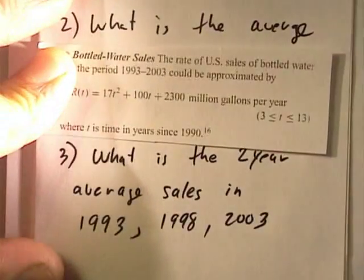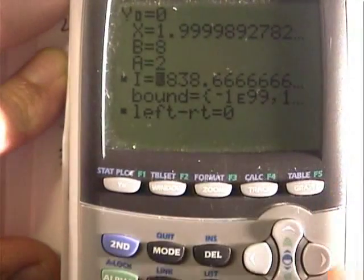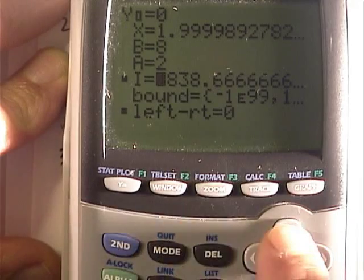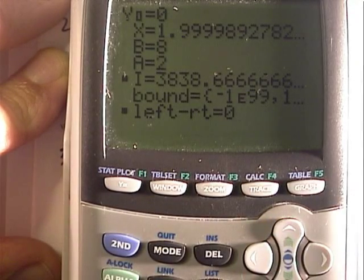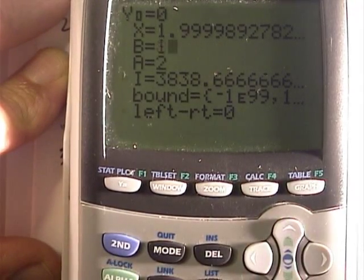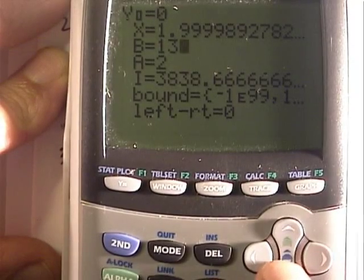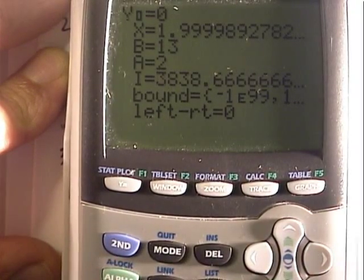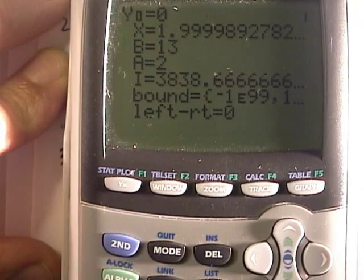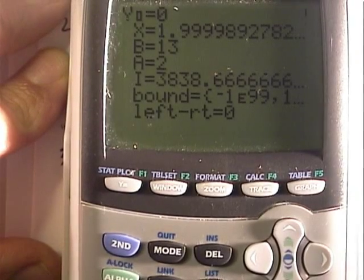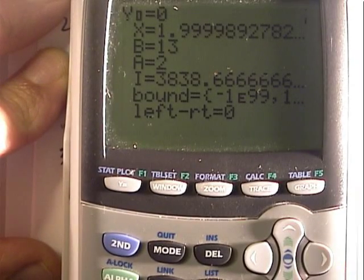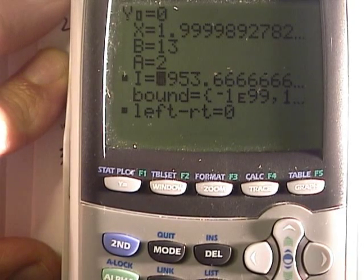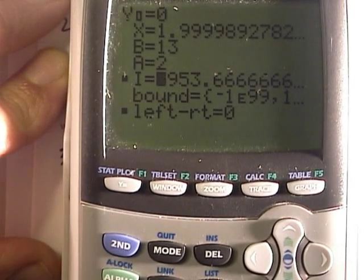And now, I'm going to look in the year 2003. All right? So, that would be putting 13 in here for B. In every case, I was looking 2 years back, the 2 year moving average. So, A did not change.